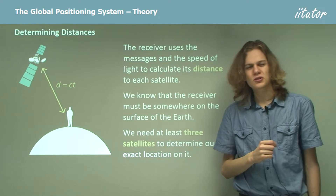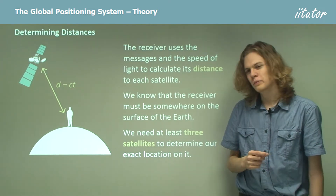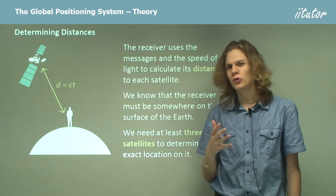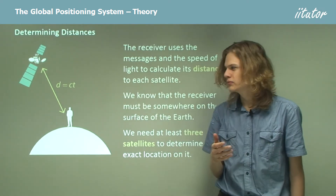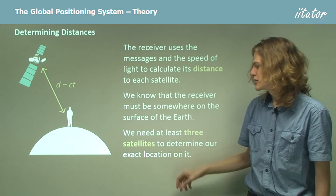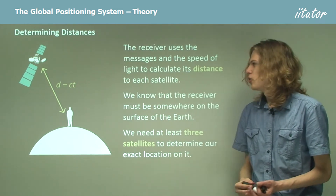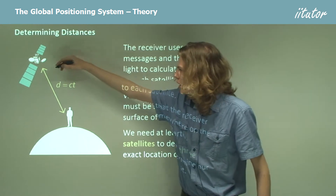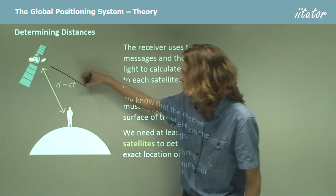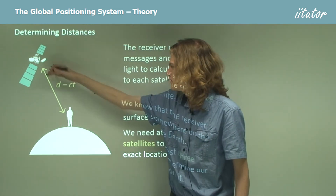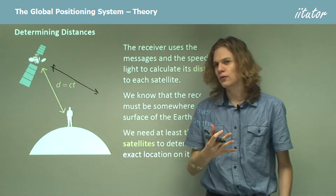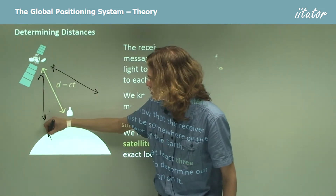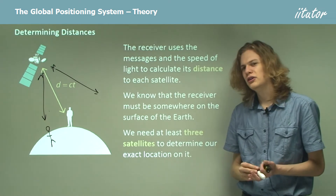So why is this useful? Well, it's not useful if we have only one distance on its own, but if we have more than one then it can be very handy. The problem with a signal from a single satellite is that although we know the distance, we don't know the direction — it could be straight down, or off to one side, or behind or in front. That could be the same distance but quite a different location.